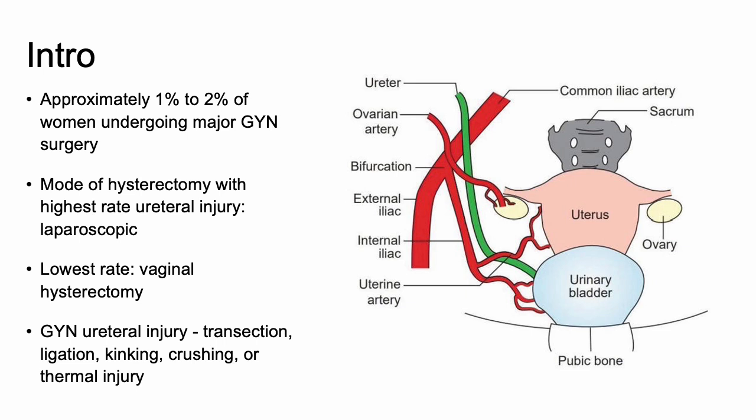The mode of hysterectomy with the highest rate of ureteral injury is laparoscopic — and that is comparing abdominal hysterectomy, laparoscopic hysterectomy, and vaginal hysterectomy. This did not include robotic hysterectomies. The lowest rate is with a vaginal hysterectomy. There are several different ways a ureteral injury can occur, including ligation, crushing, thermal, transection, or kinking of the ureter.